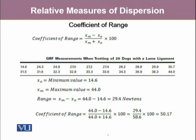The coefficient of range is the ratio of the measure of dispersion — that is, range — divided by the mean of the minimum and maximum values divided by 2. This turns out to be (Xm minus X0) divided by (Xm plus X0), multiplied by 100. In our GRF measurement data, the coefficient of range is 50.17%, because the maximum observation is 44 and the minimum is 14.6. The difference is 29.4 and the sum is 58.6, giving 50.17% variation in this data.